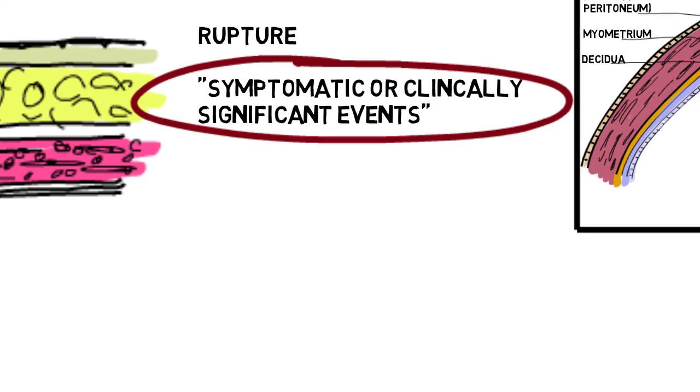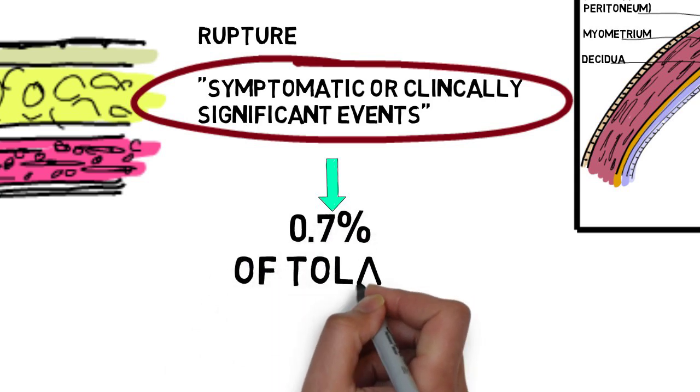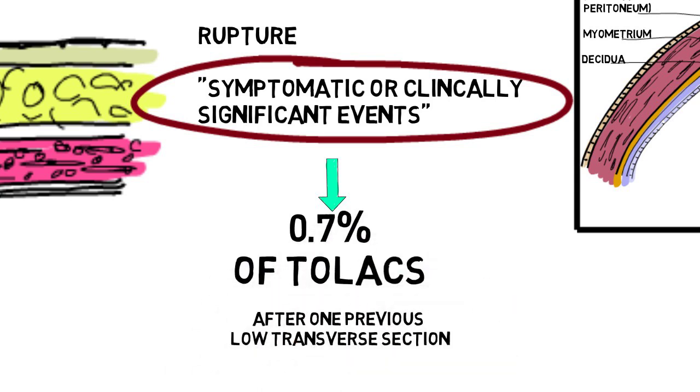This occurs in about 0.7% of TOLACs after one previous C-section. So, to answer the original question, the benefits are that a successful VBAC has lower rates of hemorrhage, infection, thromboembolism, and has a shorter recovery time. The main risk for TOLAC is failed TOLAC and the most significant risk there is uterine rupture, which is about 0.7%.